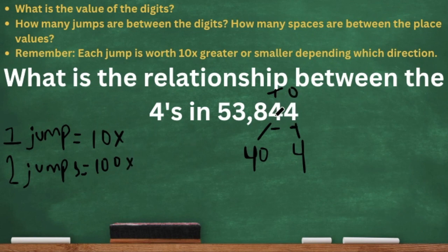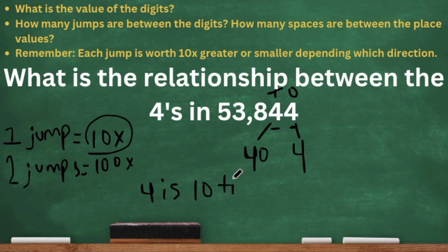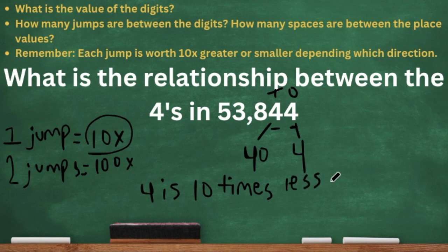The four in the ones place and the four in the tens place are right beside each other. How many jumps will it take to get from the four in the ones place to the four in the tens place? It will take one jump. So we know that one jump is 10 times. So it is safe to say that the four in the ones place, which is four, is 10 times less than 40. We could also say four is 10 times fewer than 40, or four is 10 times smaller than 40. Whatever keyword you want to use, just make sure that keyword relates to four being smaller than 40.